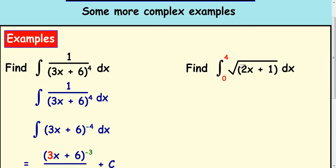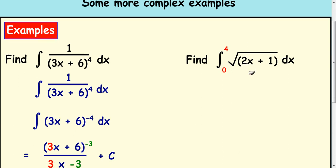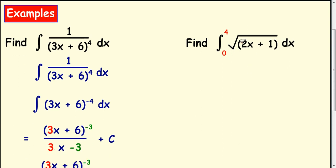Last example here. Integrate the square root of 2x plus 1 with respect to x between 0 and 4. 4 is your upper limit, 0 is your lower limit. So we can actually get an answer for this. So first things first, let's get rid of the root. And we should really write that as a half so that we can integrate this.